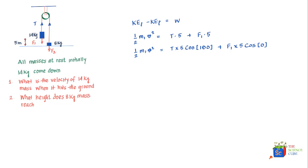Substituting m1 as 14 kilograms, the left side becomes 7v-squared. On the right side, cosine of 180 degrees is minus 1, giving minus 5T. For F1, substituting mg gives 14g times 5, and cosine of zero is 1. So equation 1 is: 7v-squared equals minus 5T plus 70g.